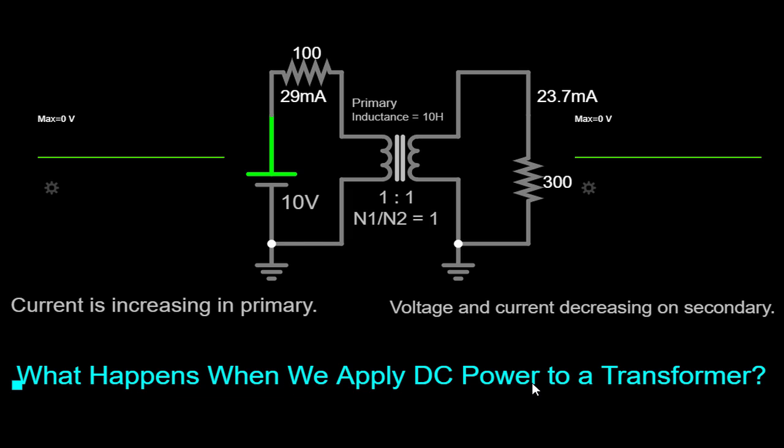We're all familiar with transformers being used in alternating current, AC systems, but what if we decide to connect a DC source instead? Let's dive deeper and uncover the effects of applying DC power to a transformer.